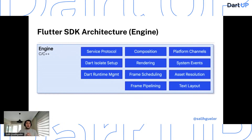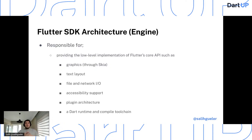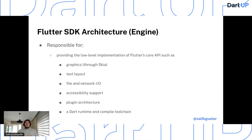Now let's go one step up to the engine. The engine is the hardest-working part — it handles rasterizing and compositing scenes, and does a lot of low-level implementations like graphics, text, file, and network I/O operations. It brings accessibility support from the embedder level, and also handles plugins and runtimes.